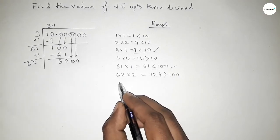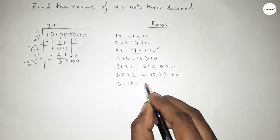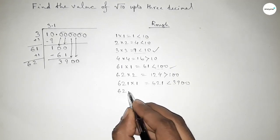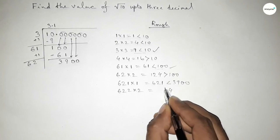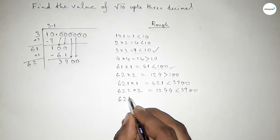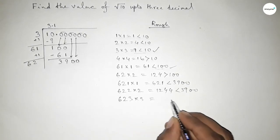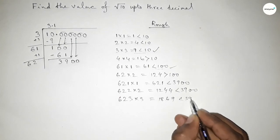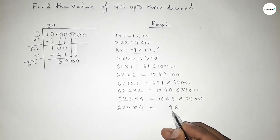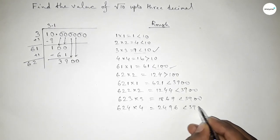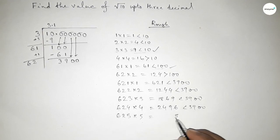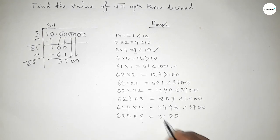Now what should we put here beside 62? We try different digits, multiplying to find which product is less than 3900 but closest to it.